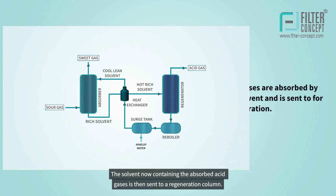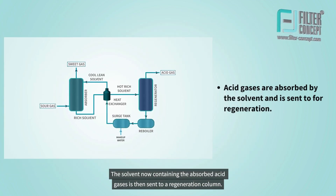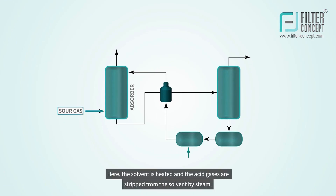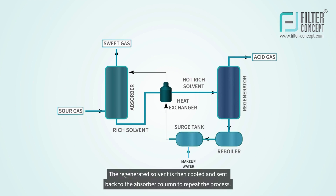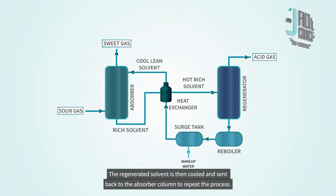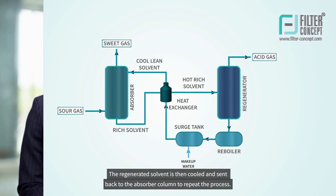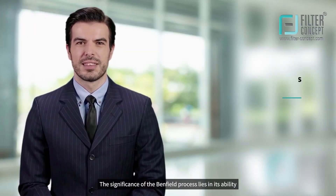The solvent, now containing the absorbed acid gases, is then sent to a regeneration column. Here, the solvent is heated and the acid gases are stripped from the solvent by steam. The resulting gas stream, containing acid gases, is sent to a sulfur recovery unit for further processing. The regenerated solvent is then cooled and sent back to the absorber column to repeat the process.